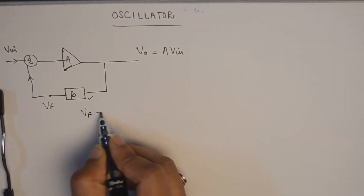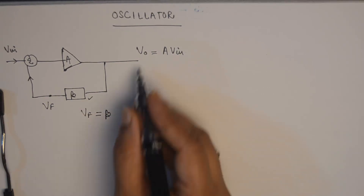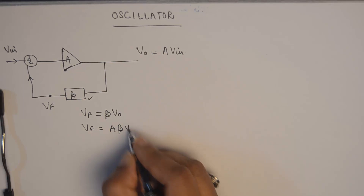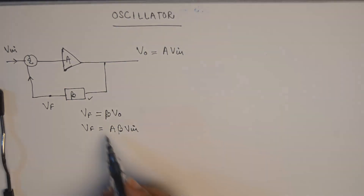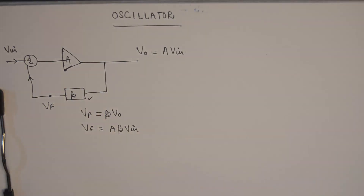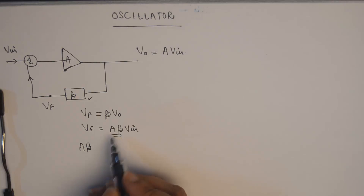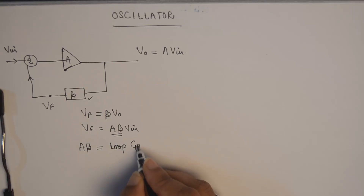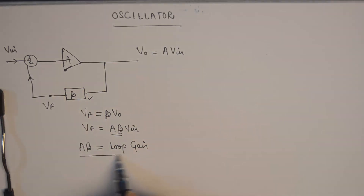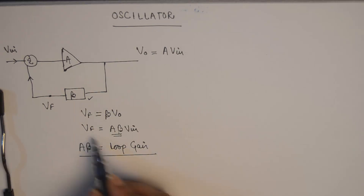So Vf is equal to beta times the input going to the feedback circuit. So Vf becomes equal to beta times V0, and substituting the value for V0, I get Vf equal to A·beta times the input voltage Vin. So beta defines what fraction of output voltage is given as feedback to the input of the amplifier. Here A·beta, which is a very important part of the oscillator, is known as the loop gain — because we have the forward path gain A and the feedback gain beta, and their product is the loop gain.